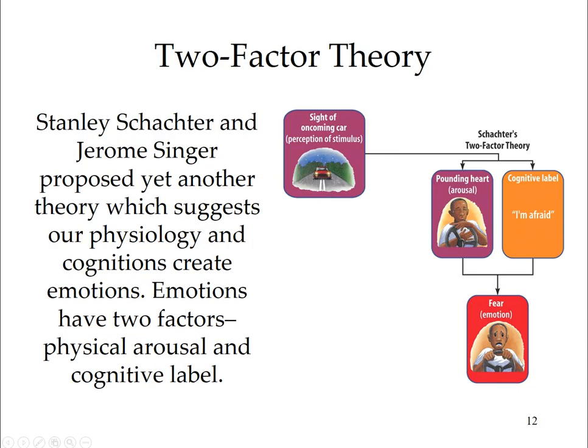Stanley Schachter and Jerome Singer proposed yet another theory, suggesting that our physiological and cognitive states together create emotions. Emotions have two factors: arousal and a cognitive label. Schachter-Singer's two-factor theory focuses on the interplay of thinking and feeling, not on the timing of feelings. This theory states that to experience emotion, one must be physically aroused and then cognitively label that arousal.